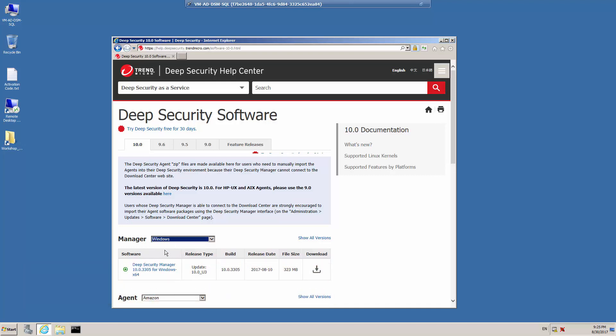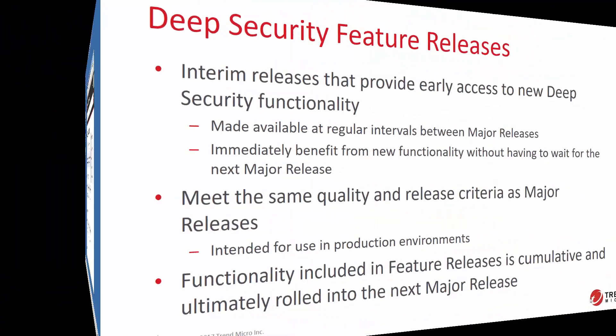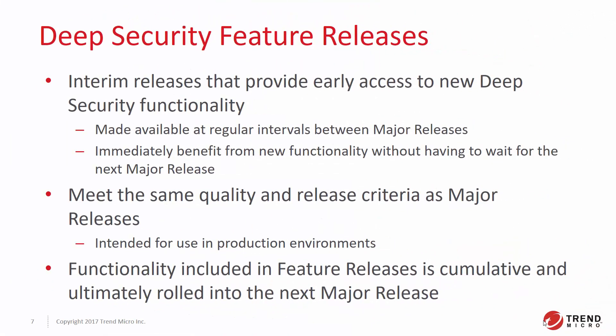From the list, select your appropriate operating system and click Download. Note that a new tab is now available in the Download Center called Feature Releases. Deep Security Feature Releases are interim releases that provide early access to new Deep Security functionality and are made available at regular intervals between major releases. By installing feature releases, organizations can immediately benefit from new functionality without having to wait for the next major release. Feature releases meet the same quality and release criteria as major releases and are intended for use in production environments. Feature releases are comprised of new versions of Deep Security Manager and agents. The new Deep Security Manager is compatible with both the old and older versions of Deep Security Agents.